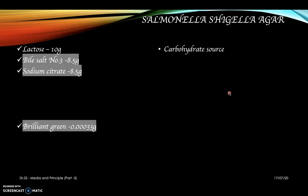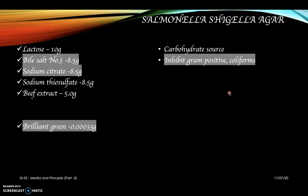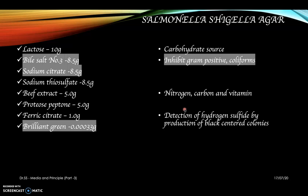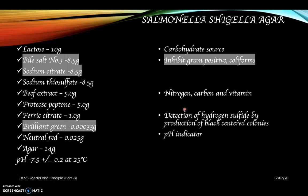The medium compositions are lactose as the carbohydrate source, bile salts, sodium citrate, and brilliant green — these inhibit gram-positive and coliform organisms, explaining why Enterococcus faecalis cannot grow. Sodium thiosulfate serves as a sulfate source, beef extract provides nitrogen and vitamins, proteose peptone, and ferric citrate is mainly for detection of hydrogen sulfide — hydrogen sulfide production combines with ferric ions to produce the black-centered colonies seen with Salmonella. Neutral red is the pH indicator. pH is 7.5 plus or minus 0.2 at 25 degrees Celsius.